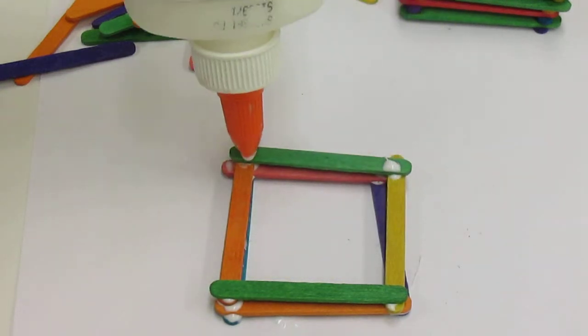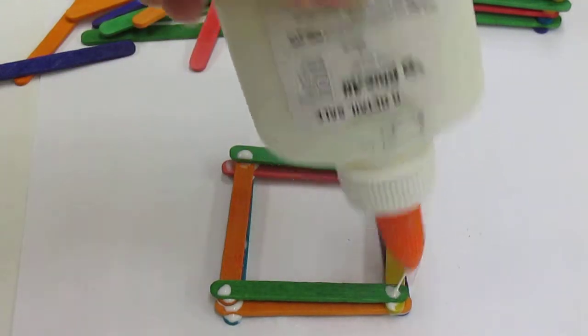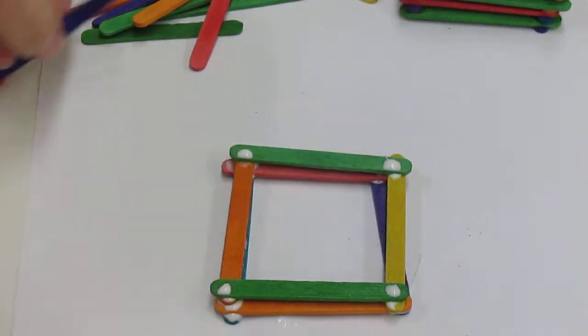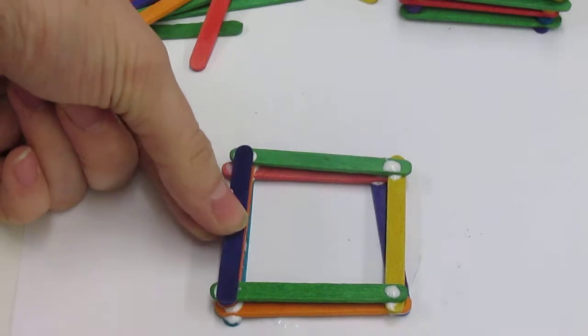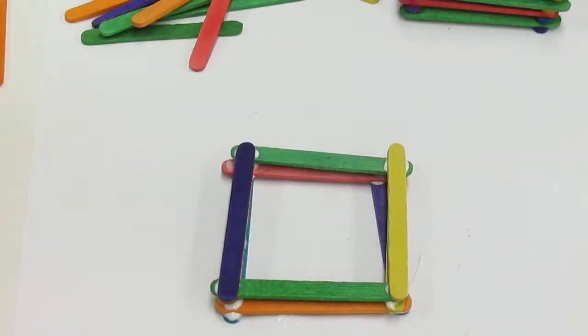I'm just grabbing whatever color I grab, but you could have a pattern if you want. Now I need my four dots again: one, two, three, four. And I just did top-bottom, so now I need to do side-side. What's my next step?